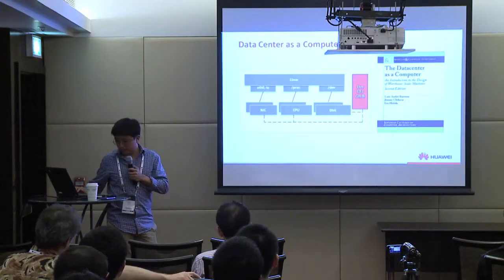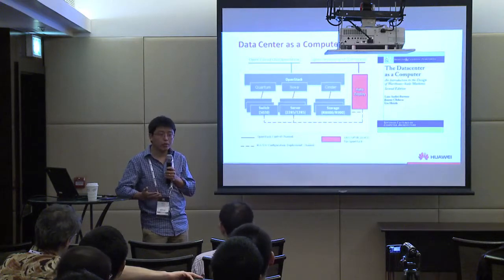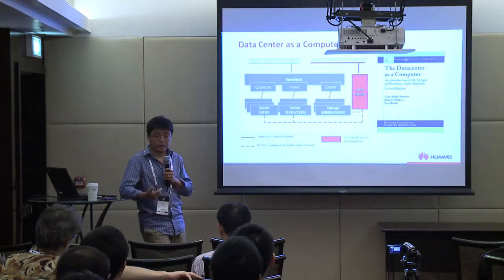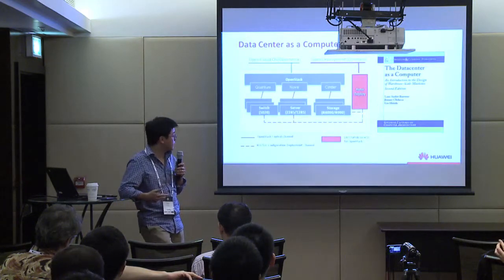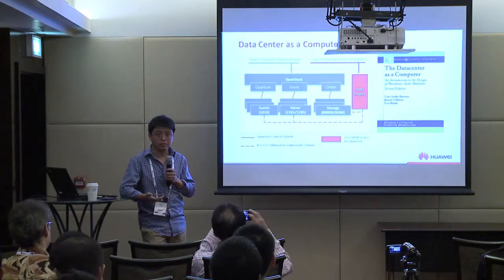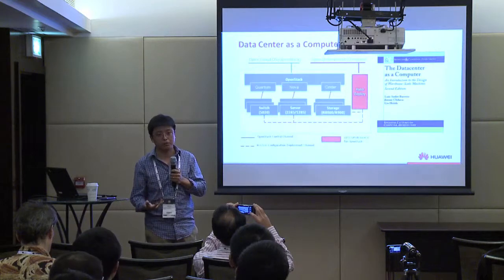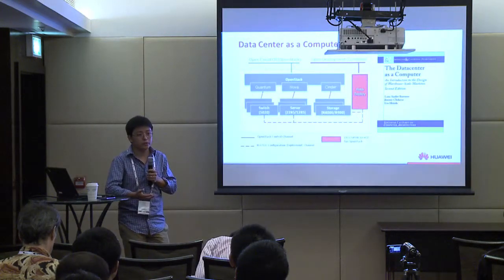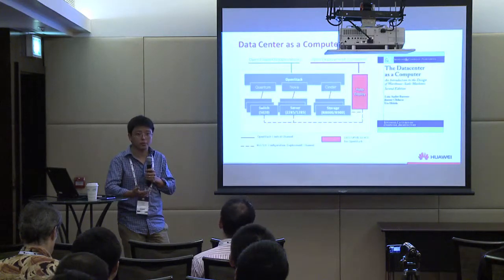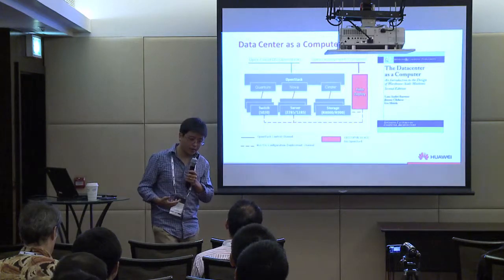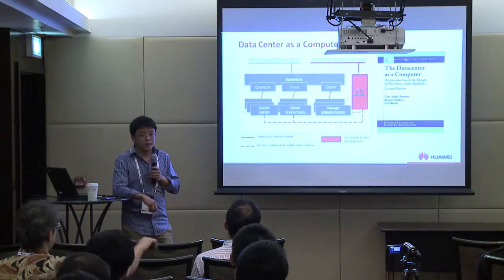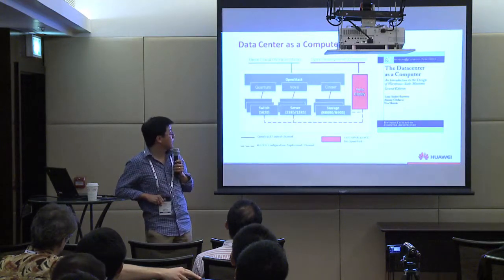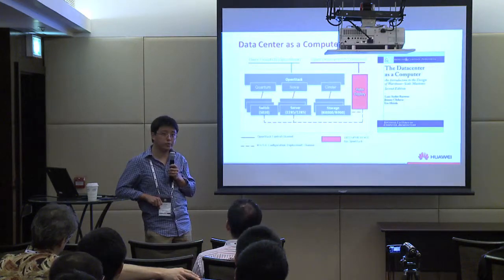Fast-forwarding to today's data center, we have a similar picture. Commodity servers act as the data center's CPU, storage servers provide storage capacity, and switches handle networking. Equally fortunately, today we have OpenStack — another truly open-sourced data center-level operating system. But something is missing. Several vendors are trying to work out a streamlined deployment system, and it's still a very vibrant area to work on.